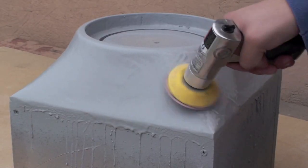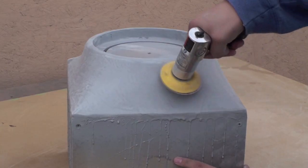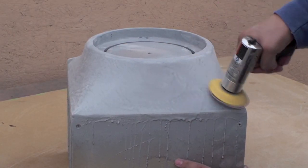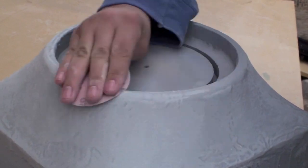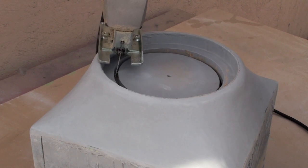We'll sand the primer using 80, 220, and 400 grit for a smooth finish. I'm using a DA sander, but I recommend hand sanding where necessary. The final step before paint is to cut out the mounting hole that was pre-cut in the beginning.